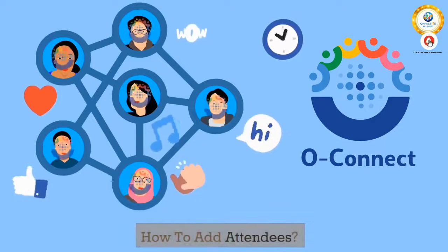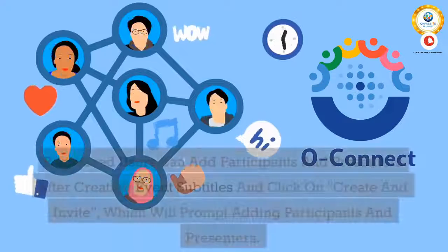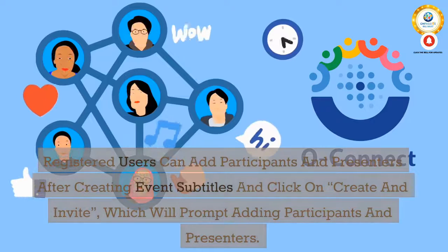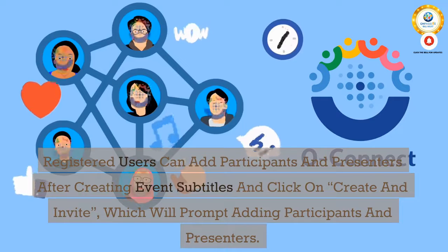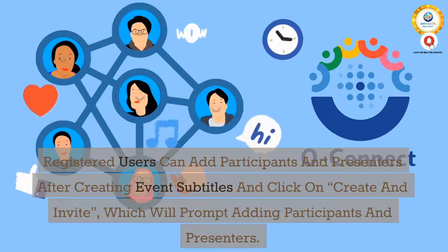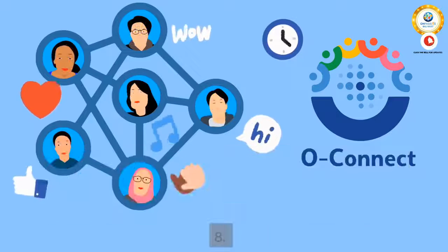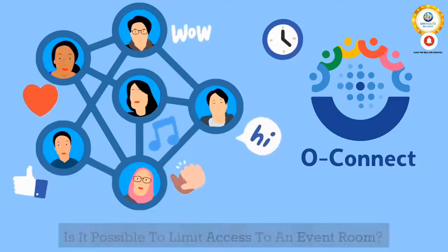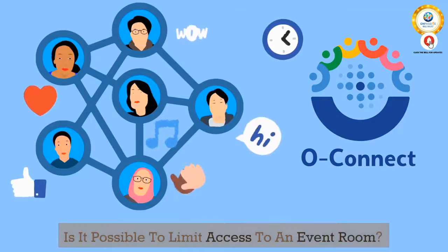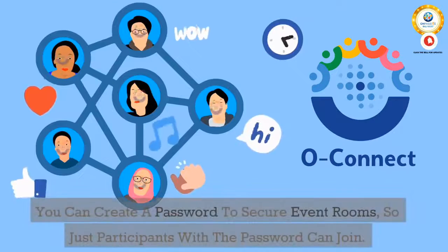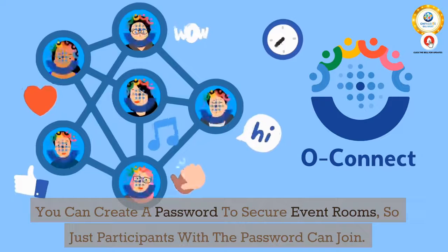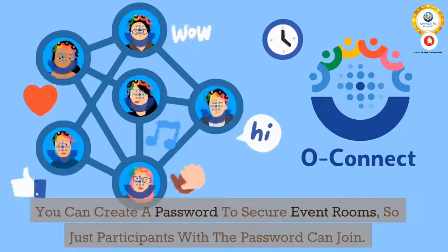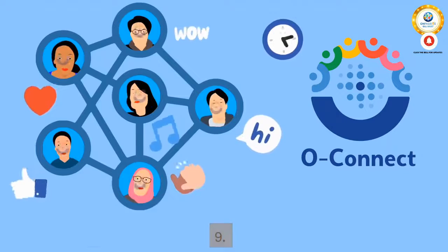7. How to add attendees? Registered users can add participants and presenters after creating event subtitles and click on "Create an invite", which will prompt adding participants and presenters. 8. Is it possible to limit access to an event room? You can create a password to secure event rooms, so only participants with the password can join.